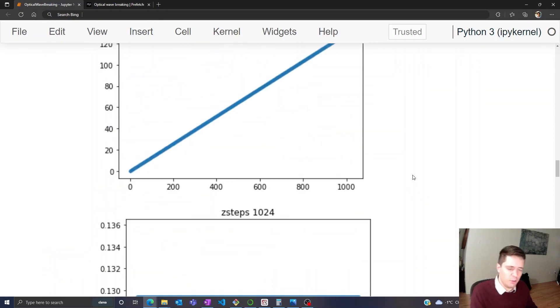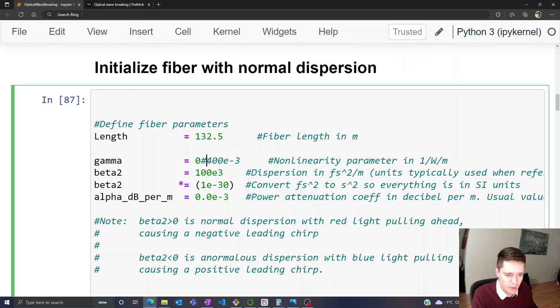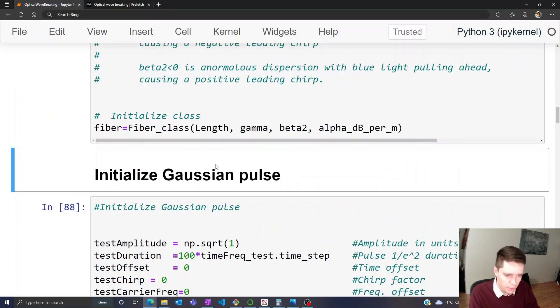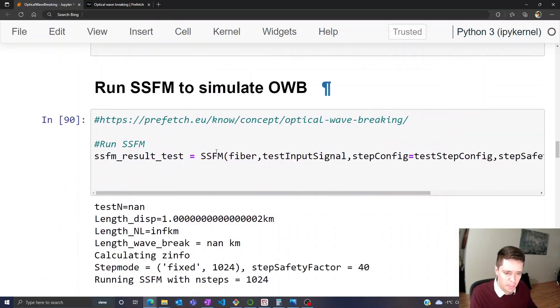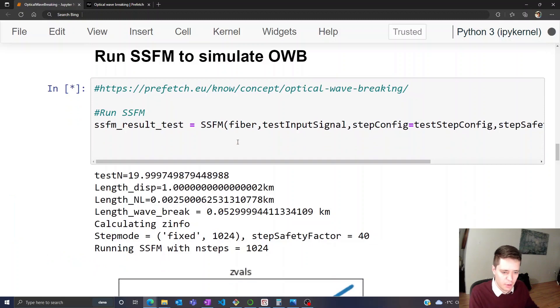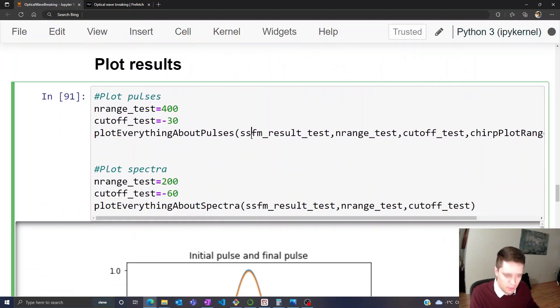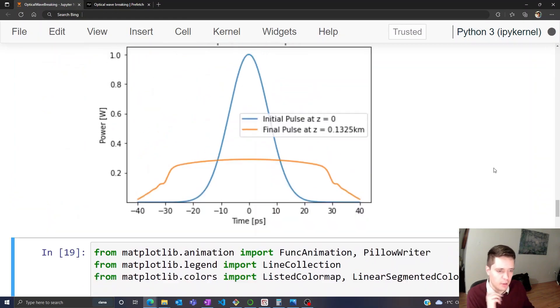But now let's see what happens if we turn the self-phase modulation back on by setting gamma to a non-zero value, like so. So now we've changed the fiber, and we can run the simulation one more time, like so. And we should be able to get a new output here.